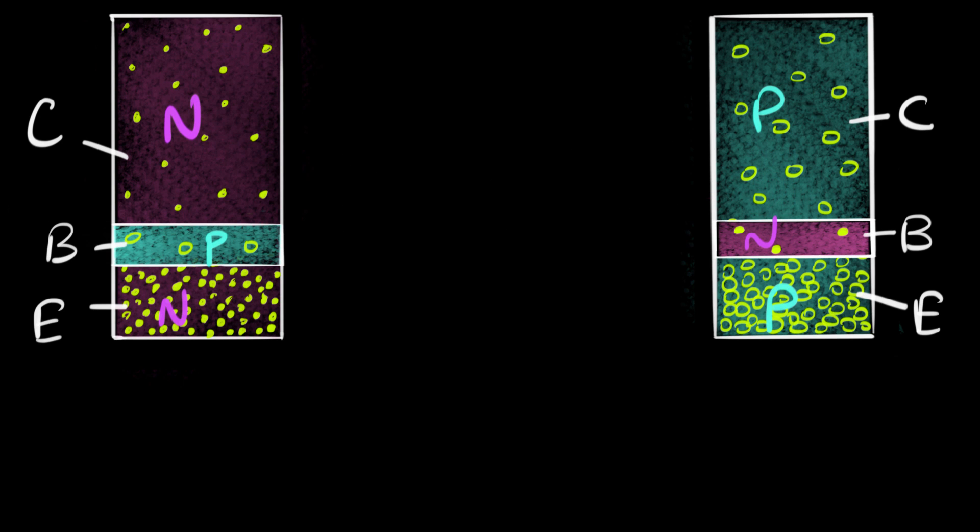Now, let's look at the circuit symbol of this. The circuit symbol of a transistor looks somewhat like this. There you have it. This is how a transistor is drawn in any circuit. You can see there are three regions. There'll be three terminals for a transistor, and these are the three terminals.